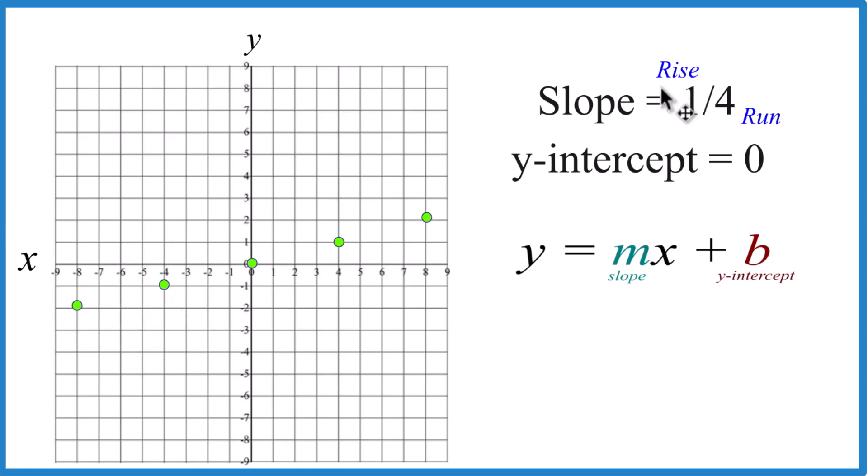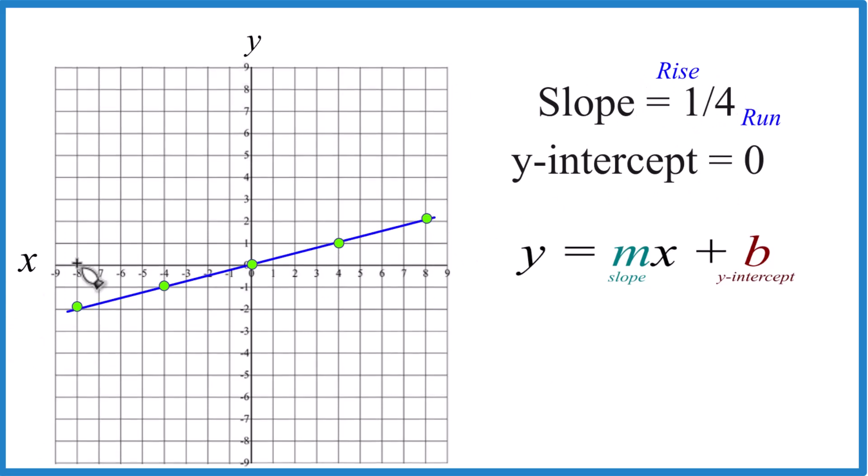And there's the line when we have a slope of one-fourth and the y-intercept of zero. Let's put a line through this here. And we'll put arrows, show that it goes to infinity.